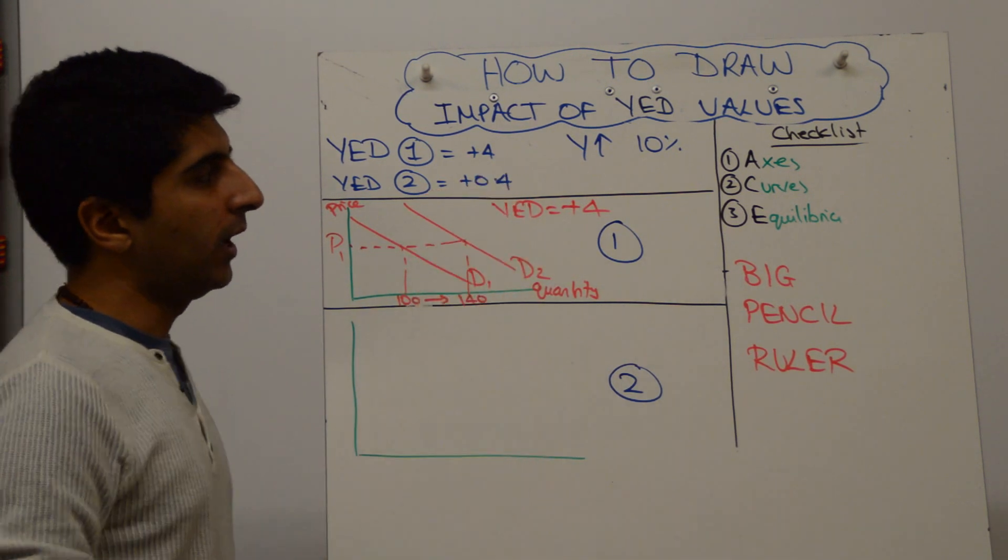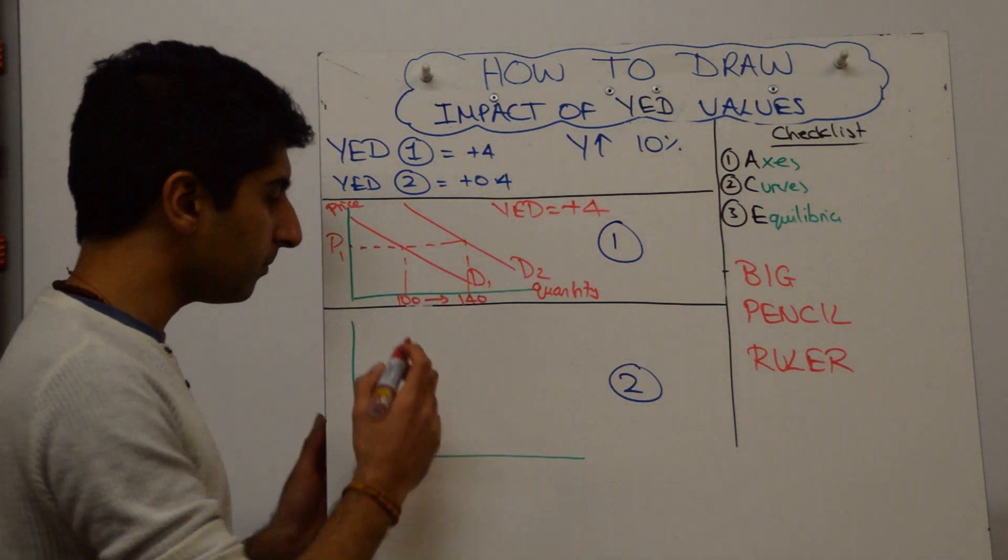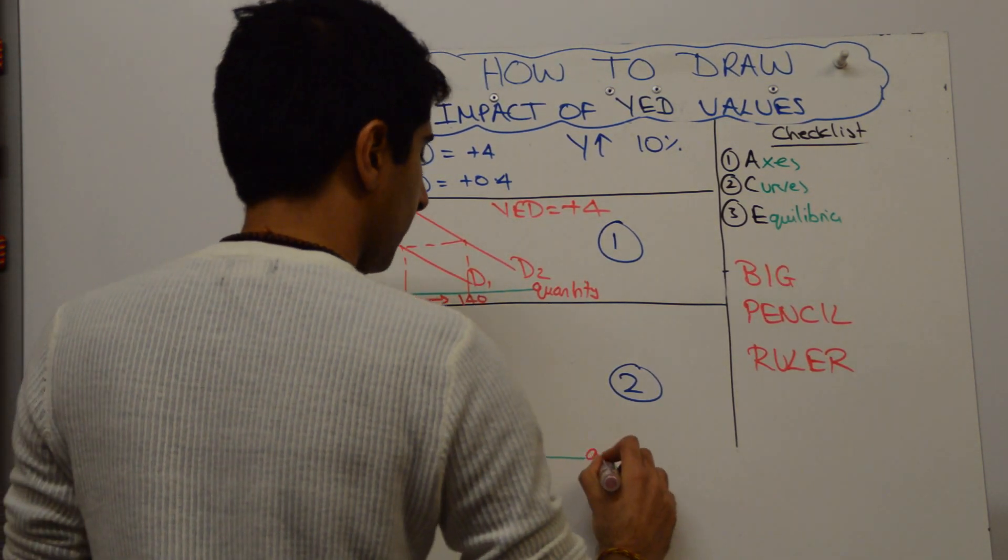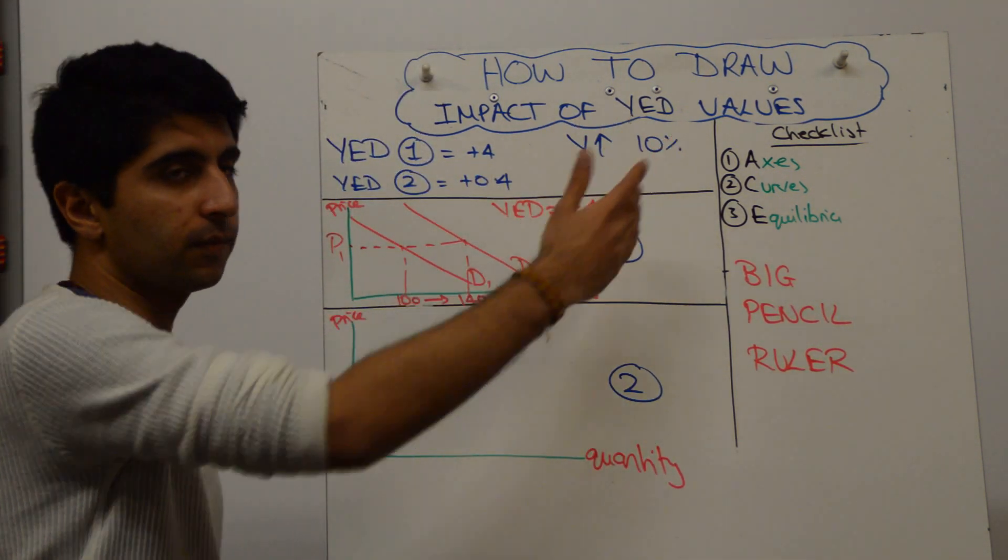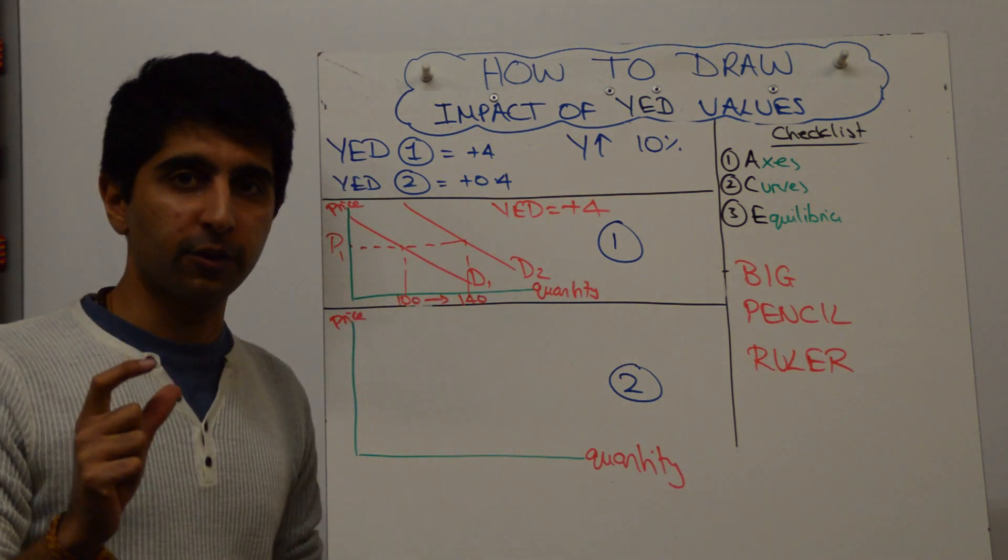What about for a good where demand is income inelastic? Same process. Label the axes, price and quantity. Still a normal good, so if incomes are forecast to rise by 10%, demand will still increase, but the size of the shift will be much smaller.